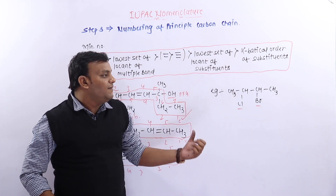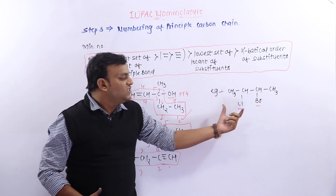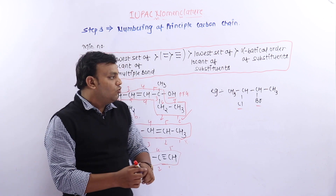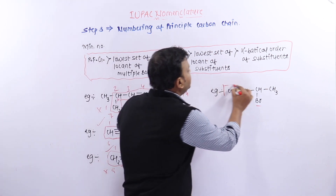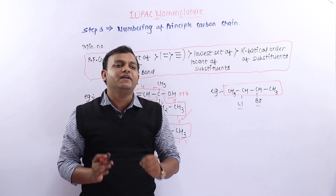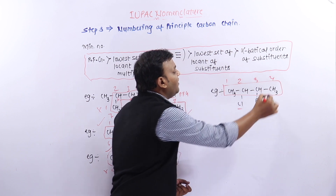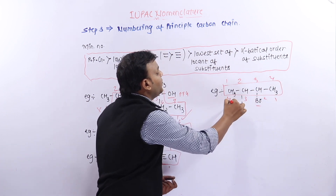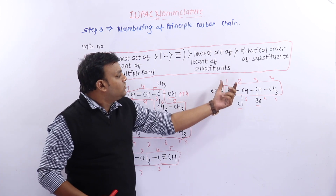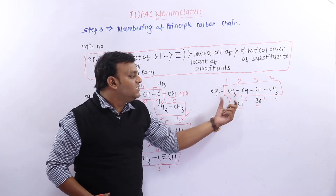Next example: सबसे पहली step — principal functional group को पहचानना। यहाँ पर कोई functional group नहीं है। Second step में principal carbon chain का selection — मुझे एक chain दिख रही है, यही मेरी principal carbon chain है। Third step: numbering of principal carbon chain — दो तरीके से numbering हो सकती है। दोनों numbering के according दूसरे पर chlorine और तीसरे पर chlorine आ रही है।